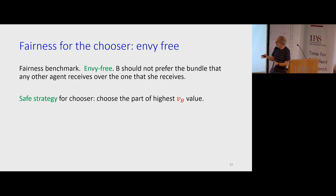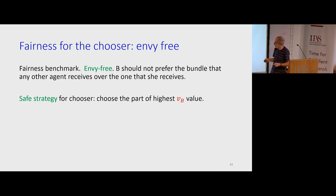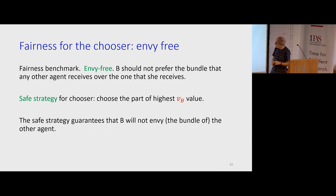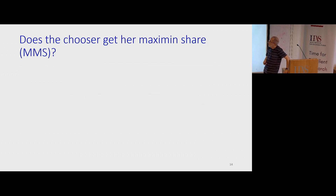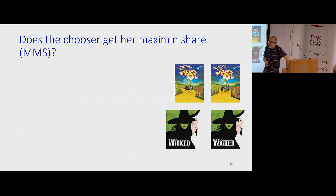A safe strategy for the chooser ensuring envy-freeness is to choose the part that she prefers. This is also true if there were N players and the chooser is the first to choose: she can choose the part she prefers most over any of the other bundles. Does the chooser also get the maximin share guarantee? And does the cutter get the envy-freeness guarantee of the chooser?